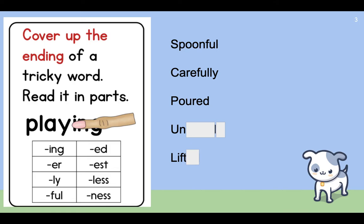I see 'un' — I definitely recognize that word piece. I see 'friend.' 'Unfriend.' And I see '-ly.' Altogether, that's 'unfriendly.' That word might have looked really unfriendly to you if you were trying to sound it out without covering up the ending or the different parts of the word. So we made it friendlier by using this strategy. The last word is 'lift' with an -ed ending, so I need to try all three endings. 'Lifted' makes sense — like I lifted a heavy box off the floor. Make sure you're using this strategy as you do your own reading or follow along during My Father's Dragon today.